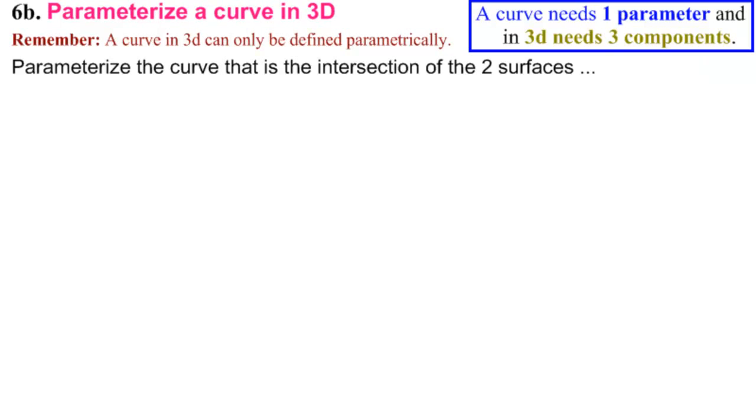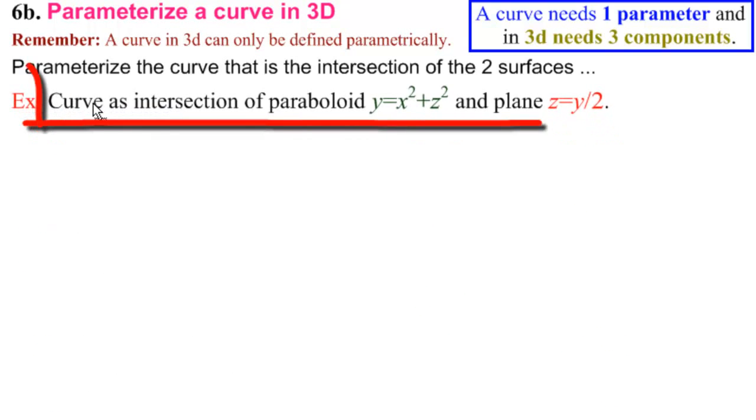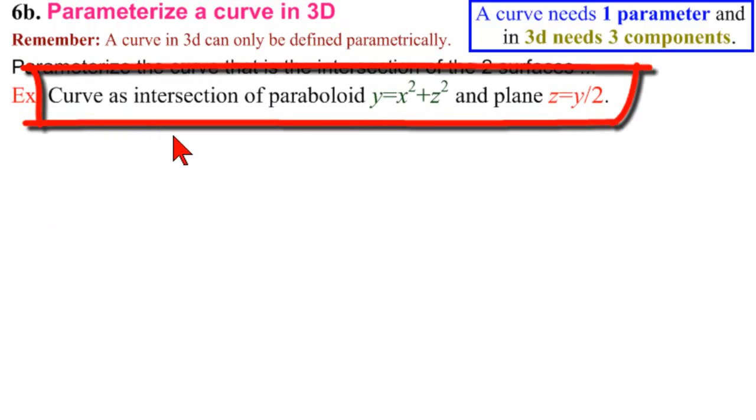Okay, now we want to make sure that we're not doing the easiest possible problems. So our example is to parameterize the curve that is the intersection of the paraboloid y equals x squared plus z squared, and the plane z equal to y over 2.